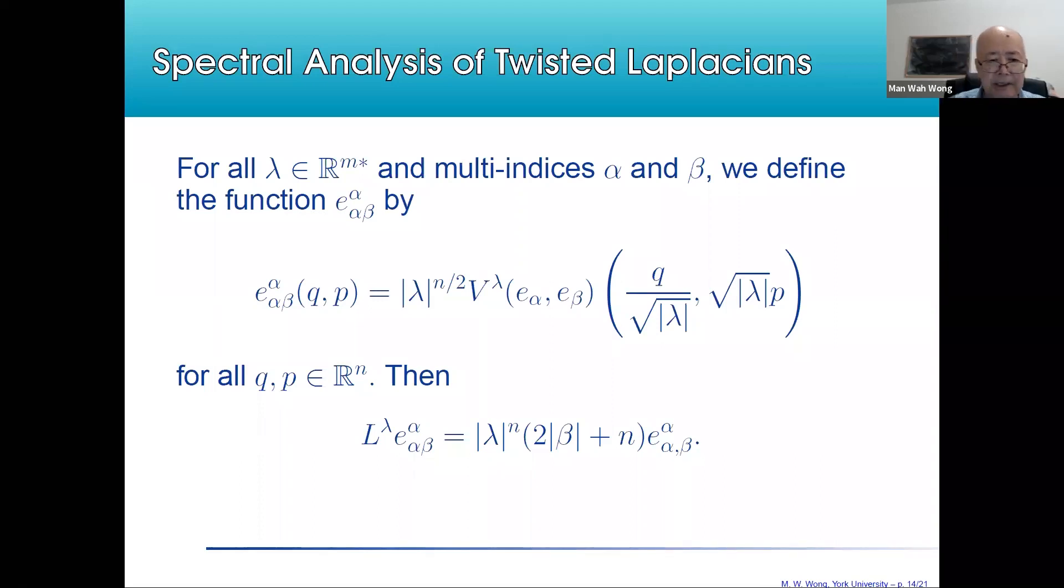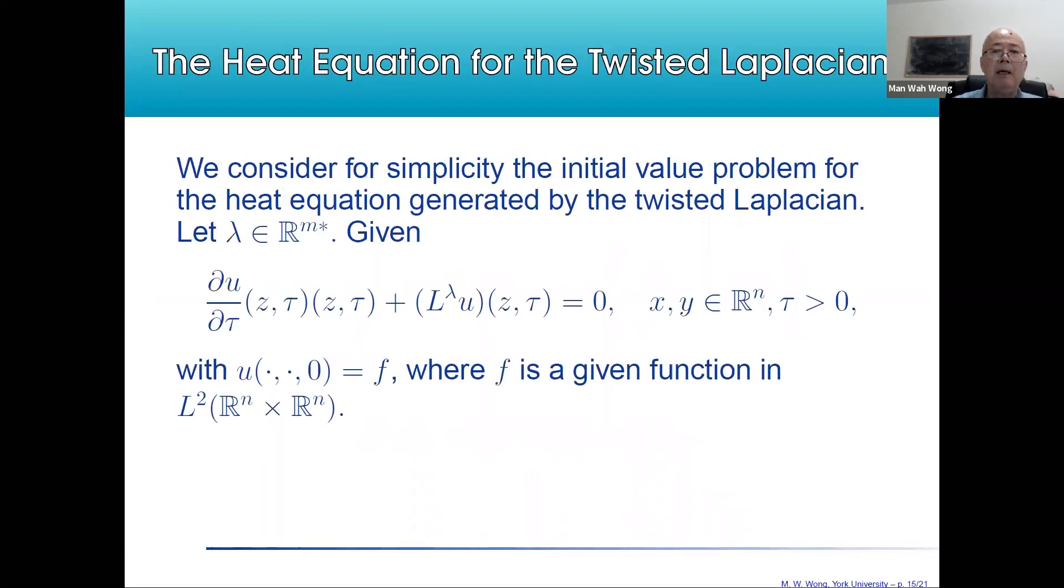We have a complete spectral analysis of the twisted Laplacians given by L lambda of E_{alpha, beta, lambda} equal to |lambda|^n times (2|beta| + n) times E_{alpha, beta, lambda}. These Hermite functions are the eigenfunctions with eigenvalues that have infinite multiplicity because there is one for each beta and there are infinitely many of them.